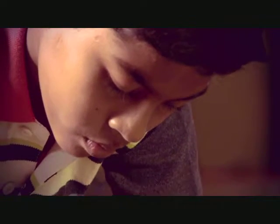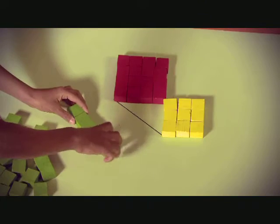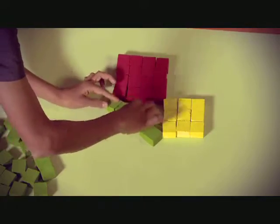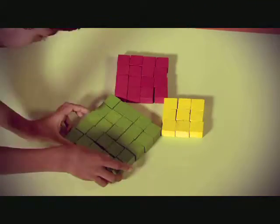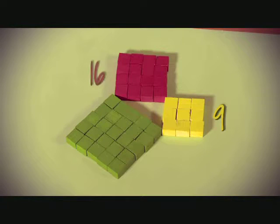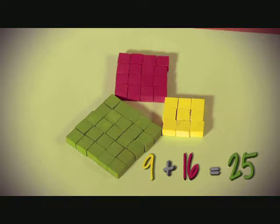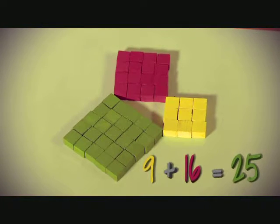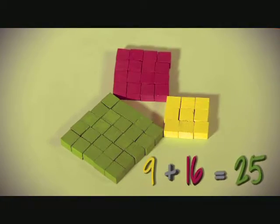Now John physically creates a square on the hypotenuse. How many little squares does he use for that? Twenty-five, which is nine plus sixteen, the sum of the squares on the other two sides. Cool, right?